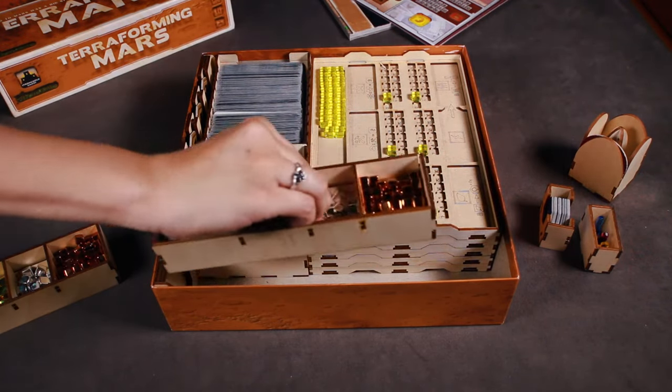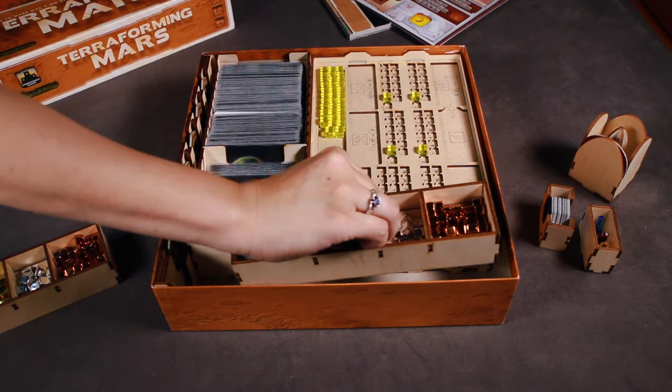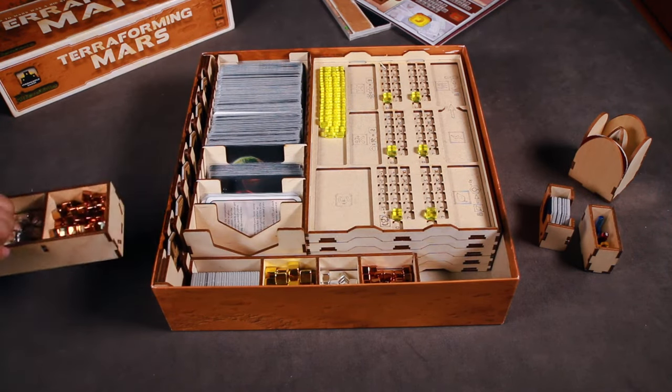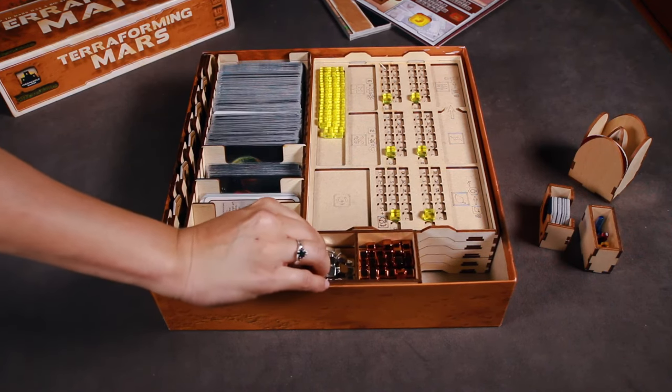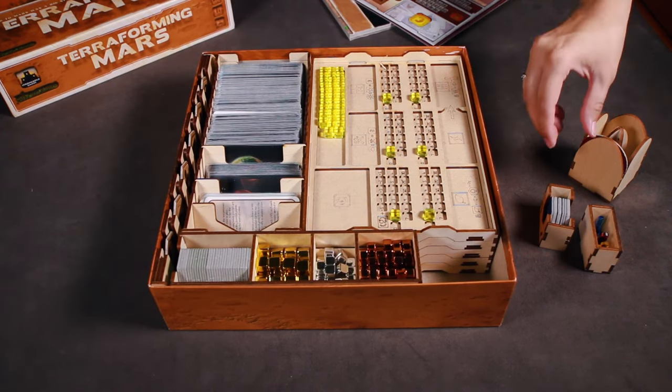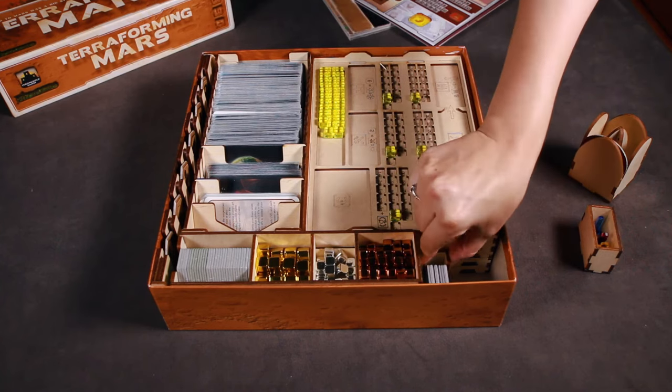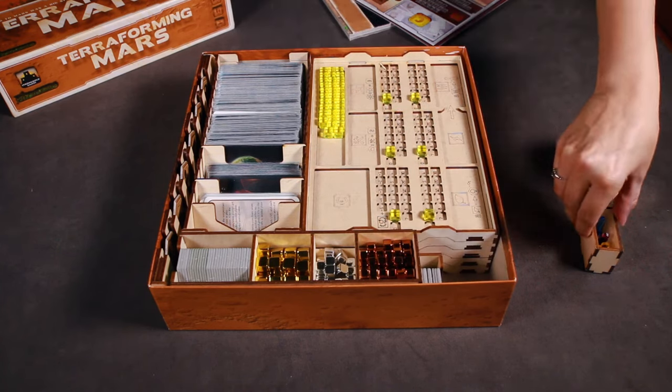The two identical token trays go here, the small token box is placed here, and then the small tile box.